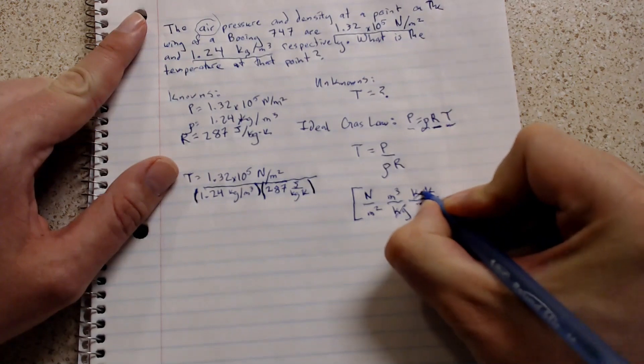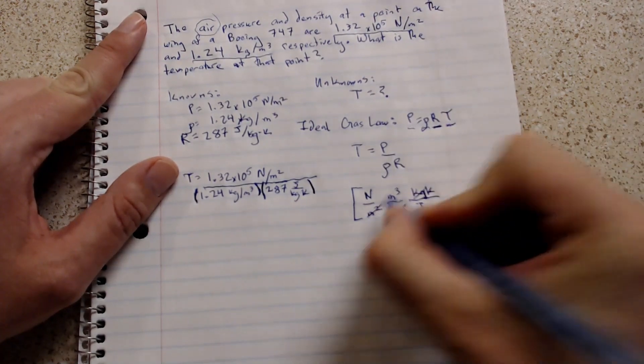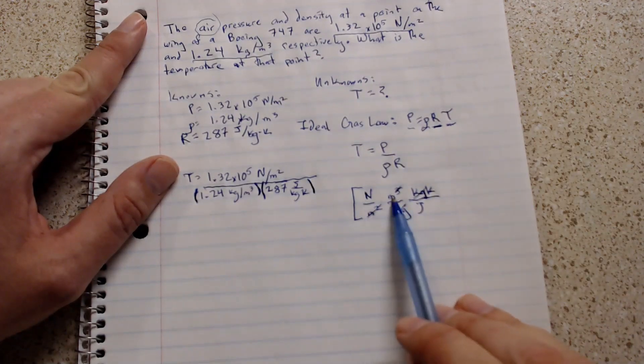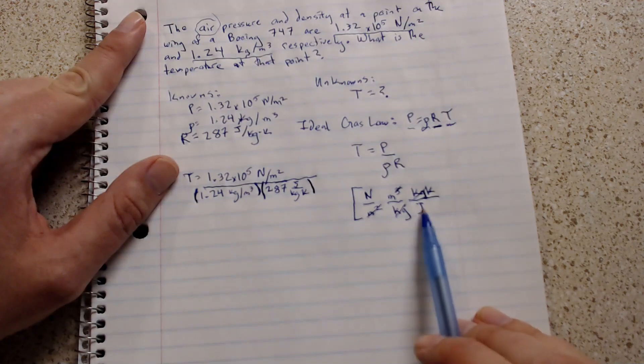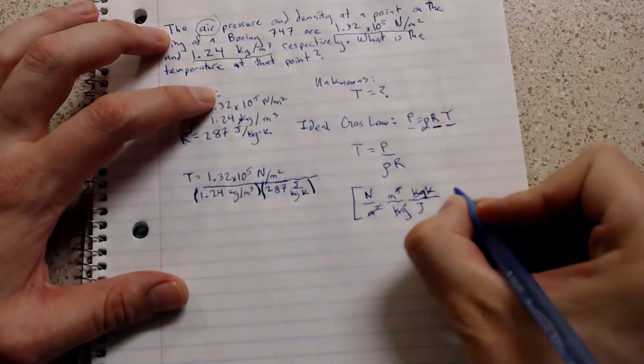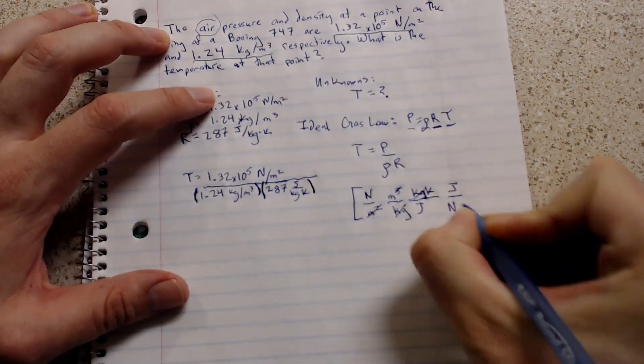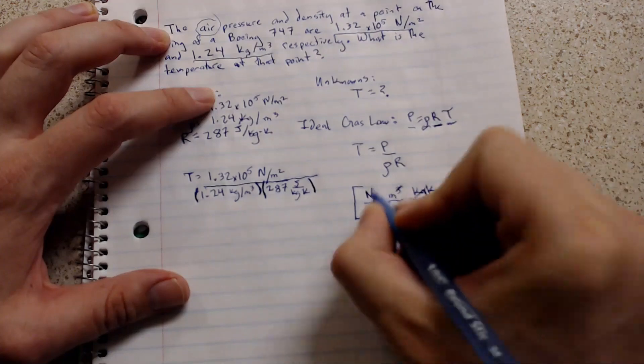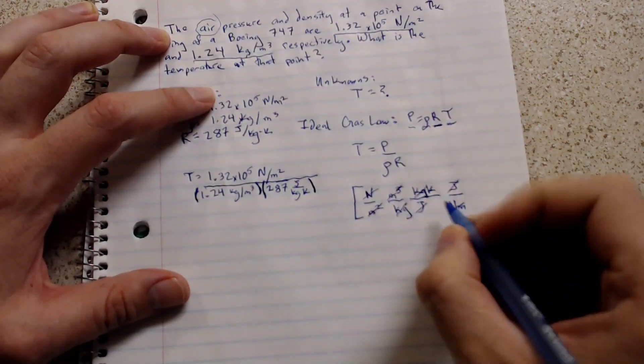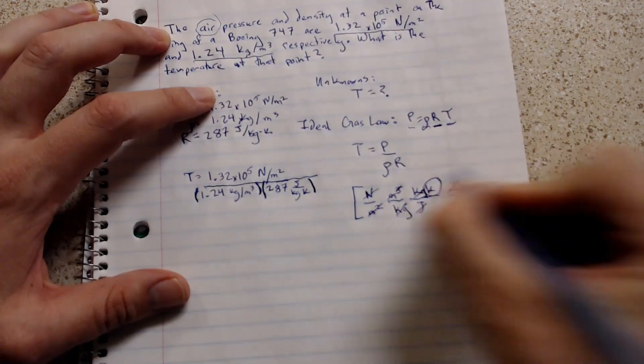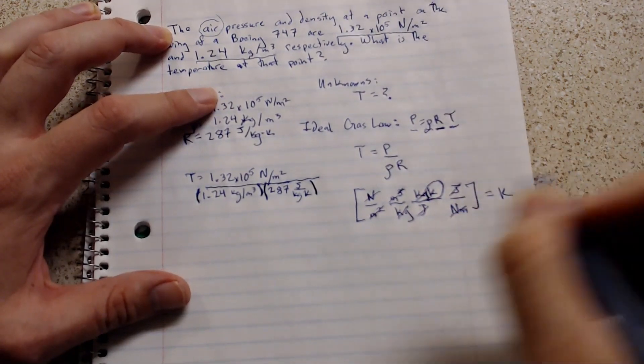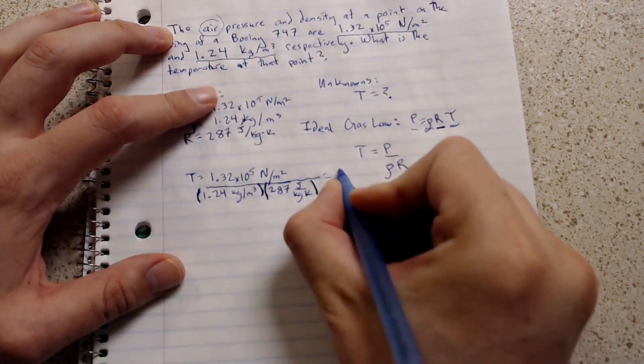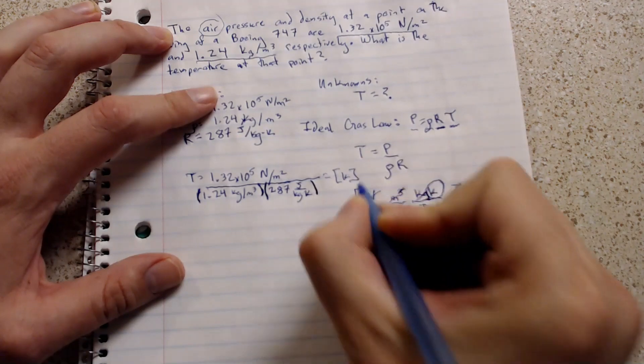You have two of the meter squares cancelling to leave one on top. So now we have newtons meters Kelvin over joules. Now one joule actually equals a newton meter. So if we put in that conversion factor you'll notice that the rest of the units cancel and the only thing we're left with is Kelvin. We should be good to plug this into our calculator and expect to get an answer in Kelvin. Let's do that right now.